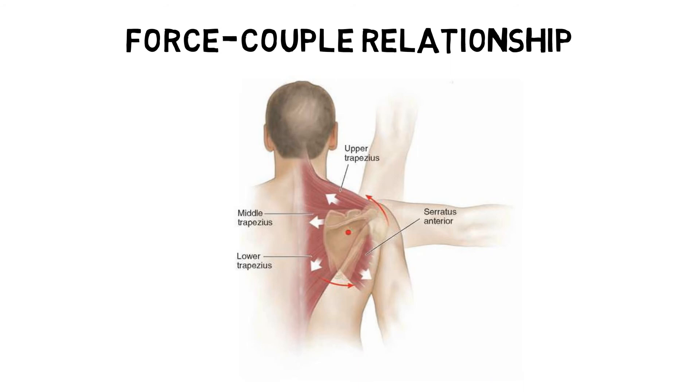For example, the upper, middle, and lower trapezius, along with the serratus anterior, all work together to rotate the scapula upwards.